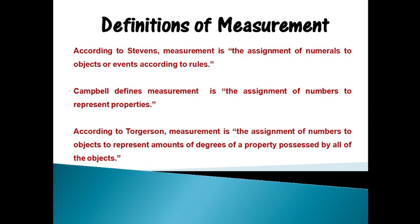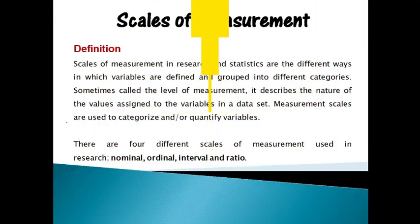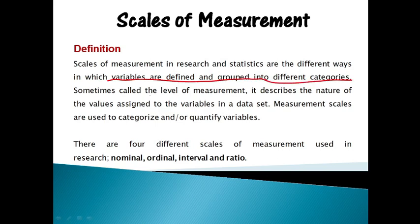Let us begin with the definitions of scale and measurement. According to Stevens, measurement is the assignment of numerals to objects or events according to rules. Campbell defines measurement as the assignment of numbers to represent properties. According to Turgerson, measurement is the assignment of numbers to objects to represent amounts or degree of a property possessed by all the objects. Scales of measurement in research and statistics are the different ways in which variables are defined and grouped into different categories, sometimes called the level of measurement.